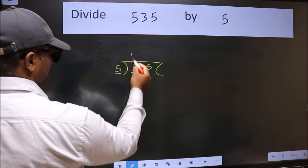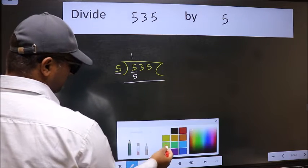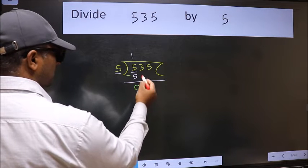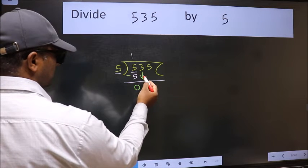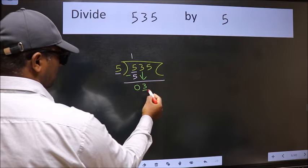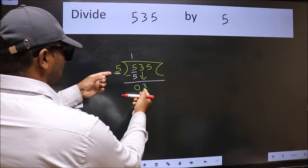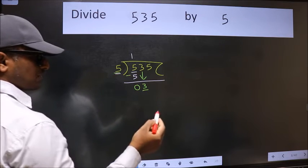Now we should subtract. We get zero. After this, bring down the beside number, so 3 comes down. Now here we have 3 and here 5. Three is smaller than 5, so we should bring down the second number.